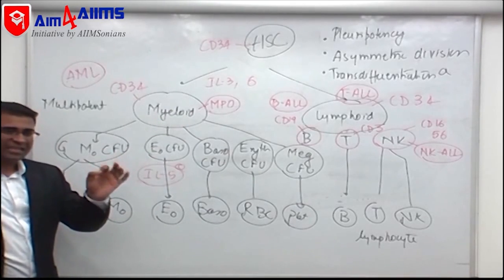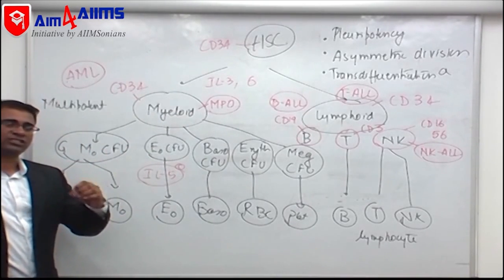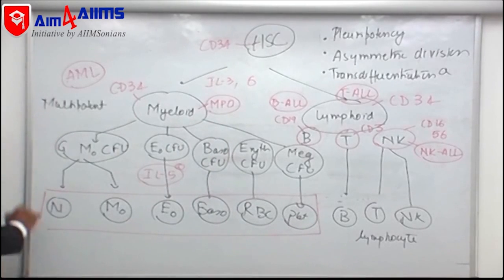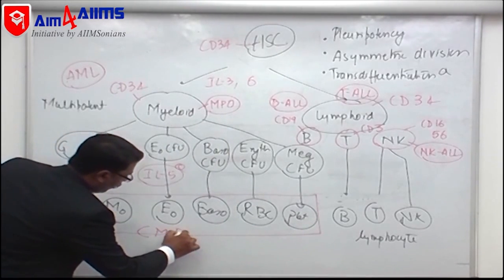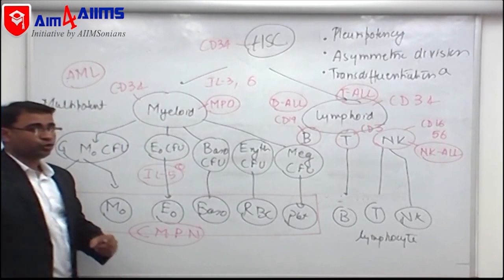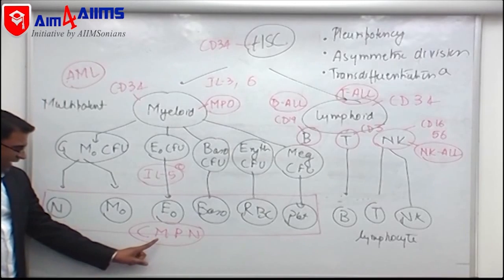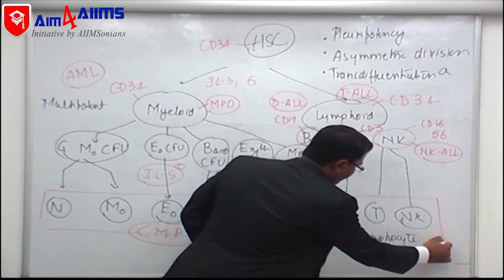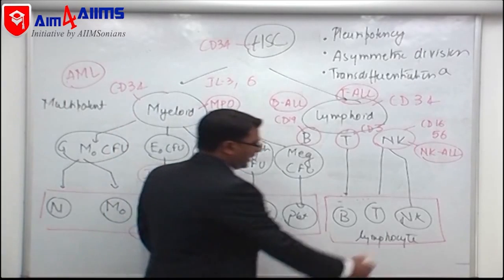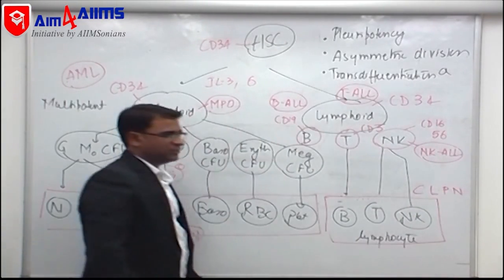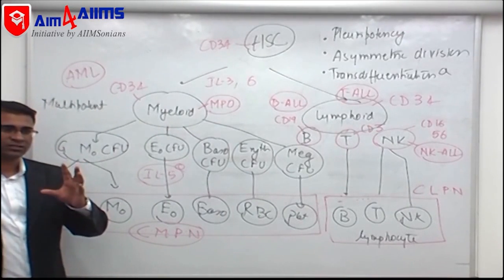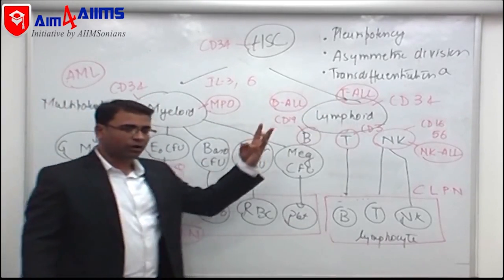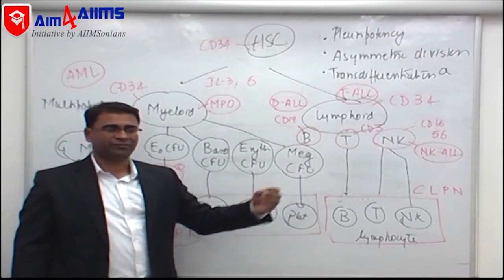These are the acute leukemias. Similarly, there are chronic leukemias. If a neoplasm arises from mature myeloid elements, we label it as chronic myeloid proliferative neoplasm. If a neoplasm arises from mature B, T, or NK lymphocytes, we call it chronic lymphoproliferative neoplasm. All WBC disorders revolve around these four categories: AML, ALL, chronic myeloid proliferative neoplasms (e.g., CML), and chronic lymphoproliferative neoplasms (e.g., CLL).